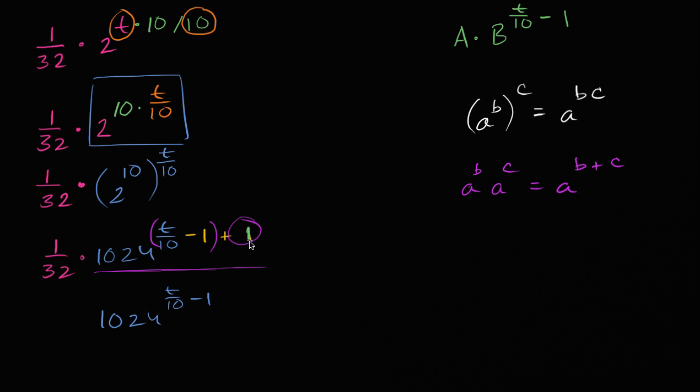And then times 1024 to the 1 power. That's this 1 power right over here. And of course, we still have the 1 over 32. All right, so now we're really close. We have the 1024 to the t over 10 minus 1. We have t over 10 minus 1. And now we just have to simplify.